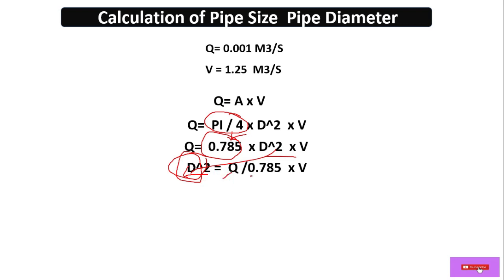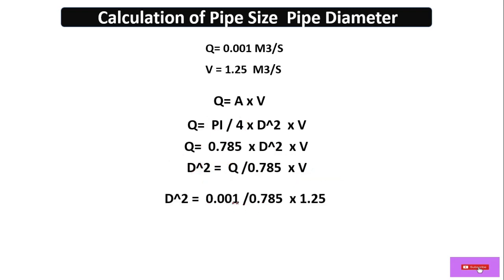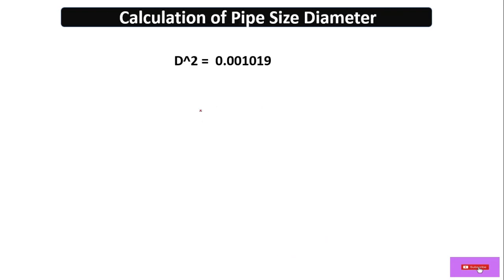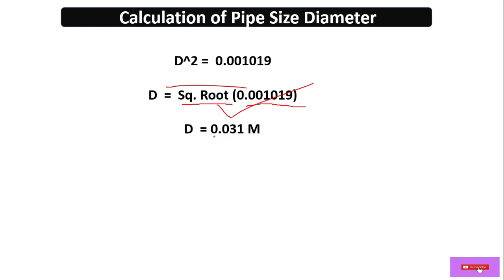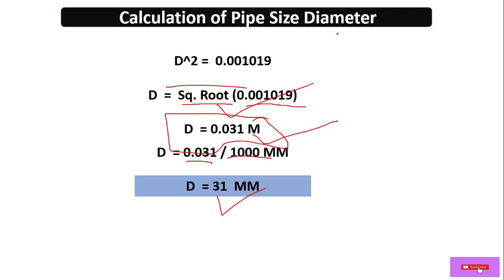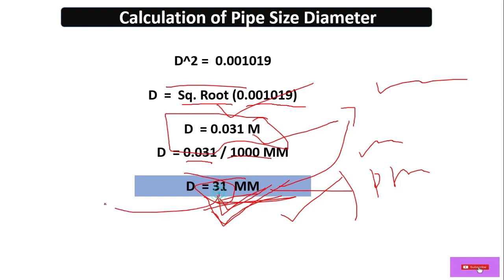Substituting values: D² = 0.001 divided by (0.785 × 1.25), which gives D² = 0.001019. Taking the square root, D = 0.031 meters. Converting to millimeters: 0.031 × 1000 = 31 mm. So the calculated pipe diameter is 31 mm.